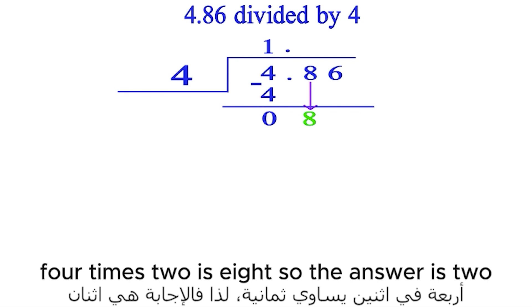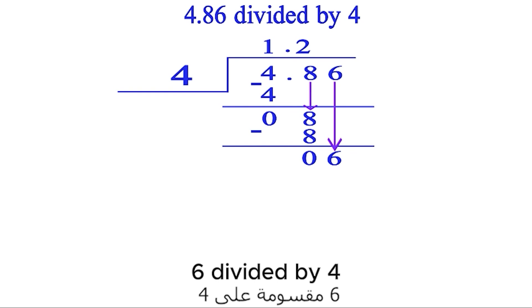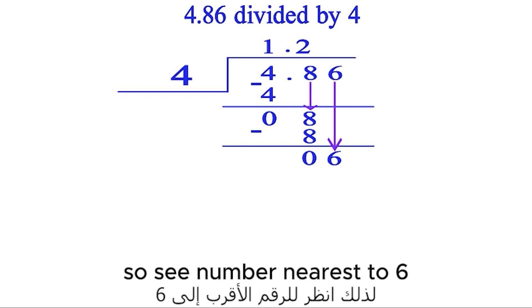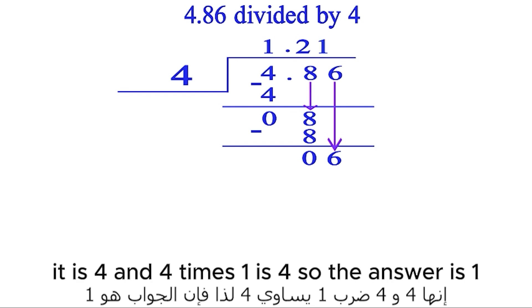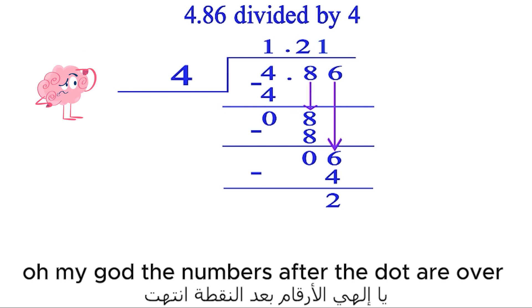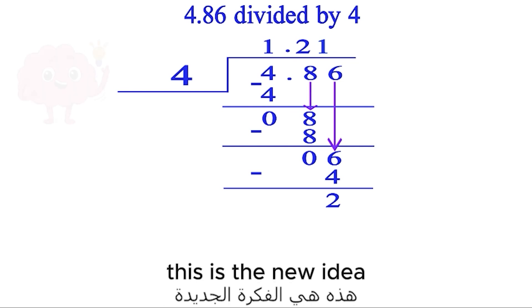Now divide after dot, bring down 8. 8 divided by 4: 4 times 2 is 8, so the answer is 2. Put 8 under 8 and subtract them. Bring down 6. 6 divided by 4: we can't find 6 in the multiplication table of 4, so see the number nearest to 6. It is 4, and 4 times 1 is 4, so the answer is 1. Put 4 under 6 and subtract them. Oh my god, the numbers after the dot are over, and the remainder does not equal 0. This is the new idea.